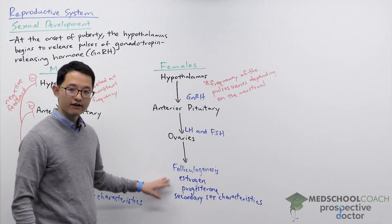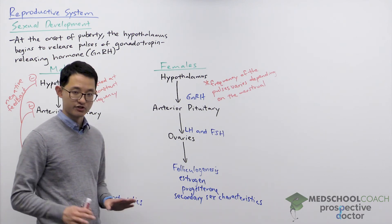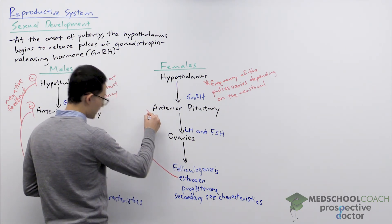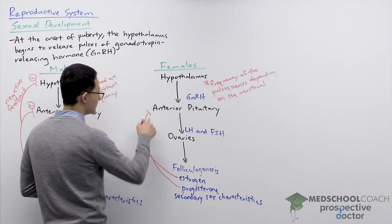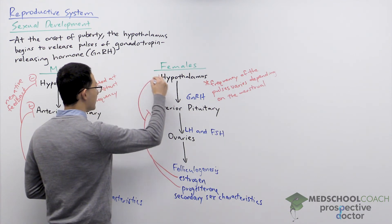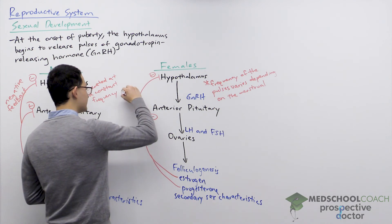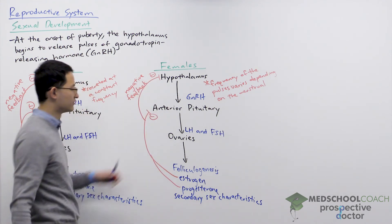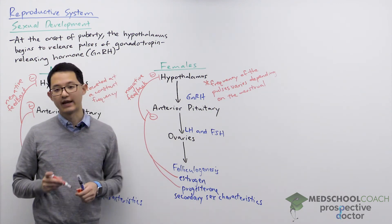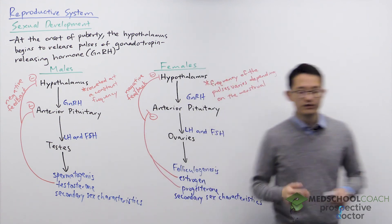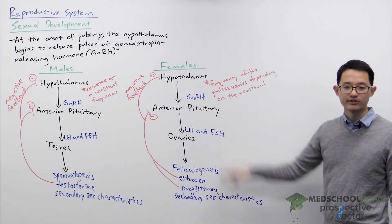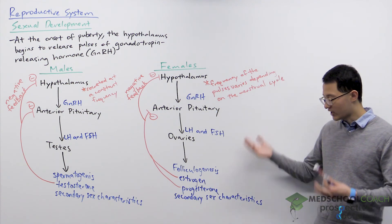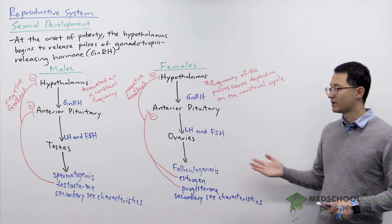Estrogen and progesterone have very important functions in the menstrual cycle and pregnancy, which we'll discuss in subsequent videos. Estrogen and progesterone also have an inhibitory function on the anterior pituitary as well as the hypothalamus — this is a form of negative feedback where their release inhibits GnRH from the hypothalamus and LH and FSH from the anterior pituitary. For females this process is more complicated since it changes during the menstrual cycle, and subsequent videos will discuss how FSH, LH, estrogen, and progesterone vary during the female reproductive cycle.